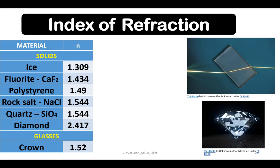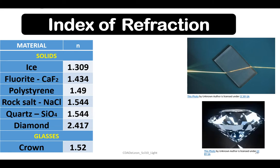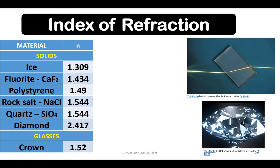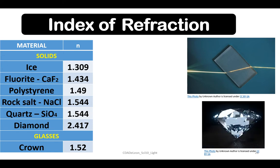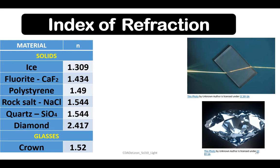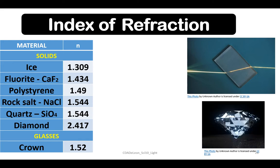Rock salt, sodium chloride, has 1.544. Quartz also has 1.544, and diamond has 2.417 Index of Refraction.